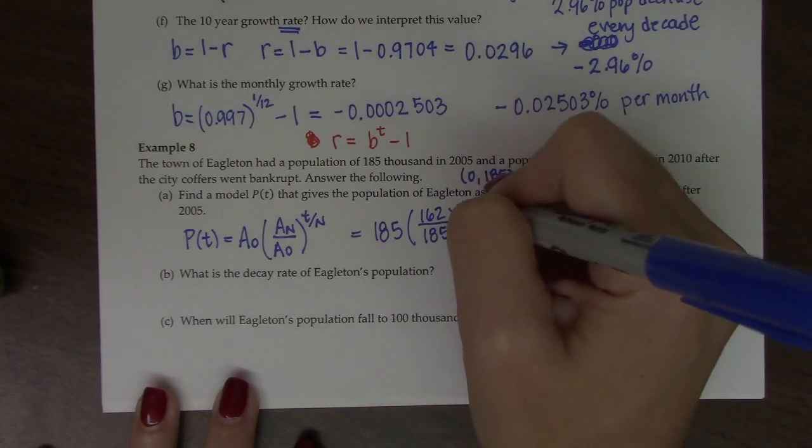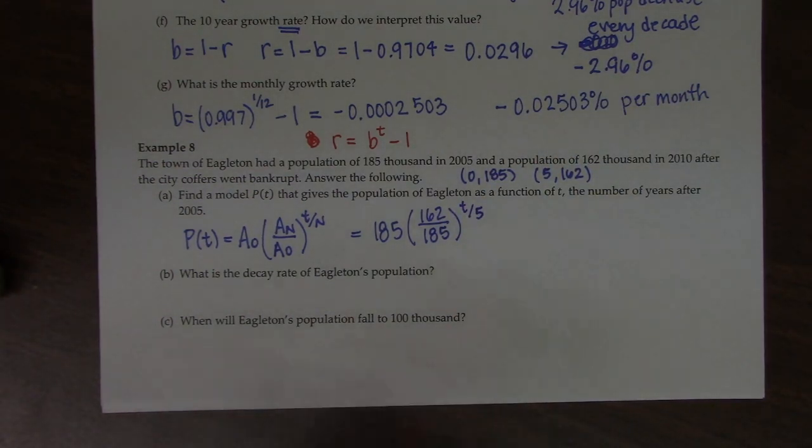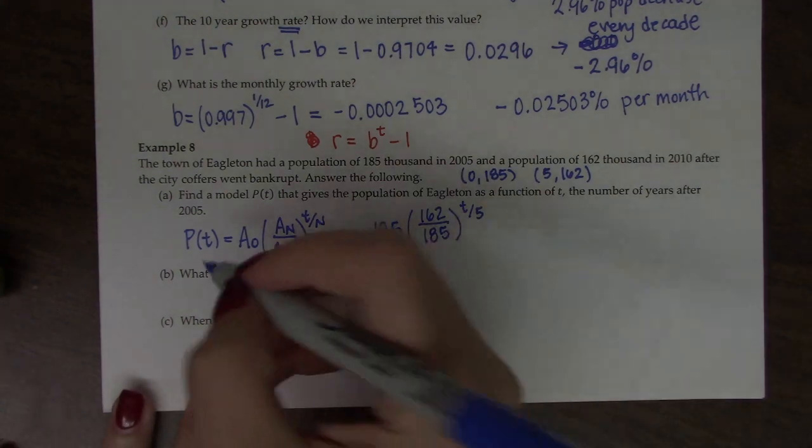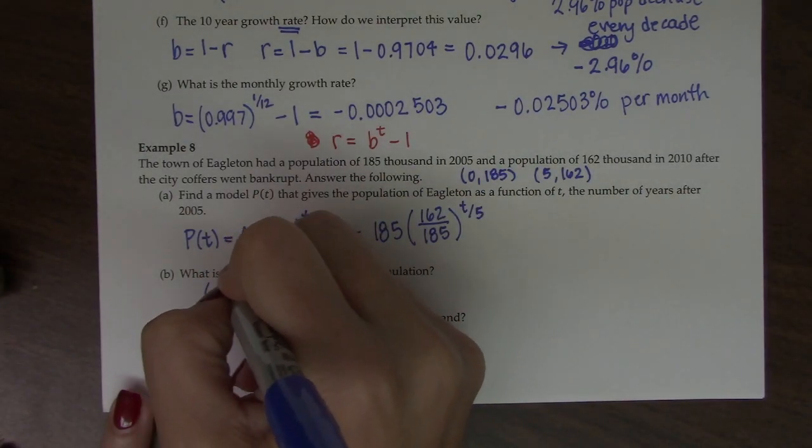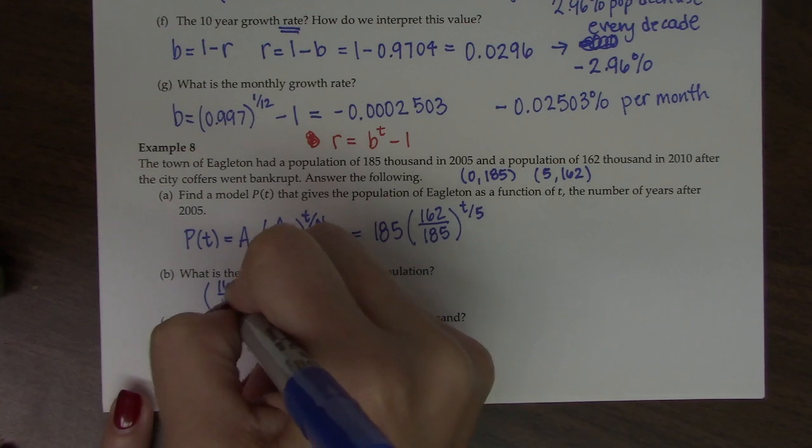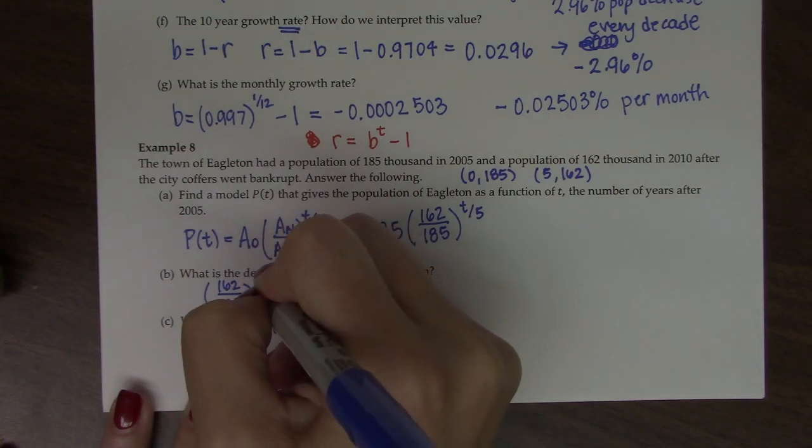And this is t times the one-fifth or t over 5. What is the decay rate of Eagleton's population? So we'll take, right, we ignore the t. We say 162 over 185 raised to the one-fifth.